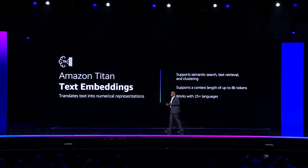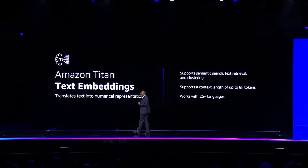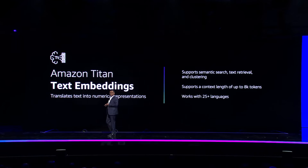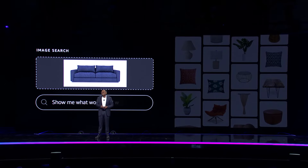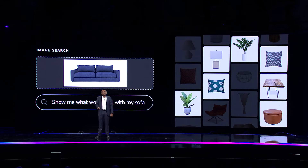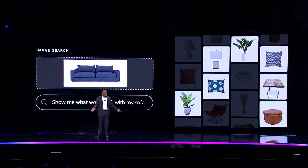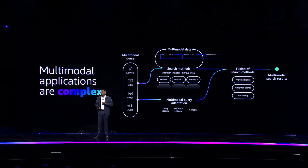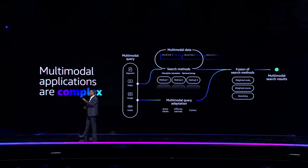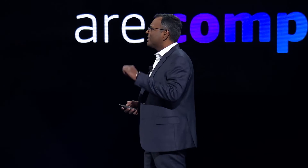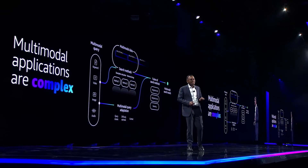As our customers continue to build more and more applications, they want to combine image and text that support both modalities. For example, imagine a furniture retail company with thousands of images. They want to enable their customers to search for furniture using a phrase, image, or even both — with instructions like 'show me what works well with my sofa.' To build this kind of experience, developers need to spend time piecing together multiple models, which increases the complexity of your Gen AI stack, decreases efficiency, and impacts customer experience.